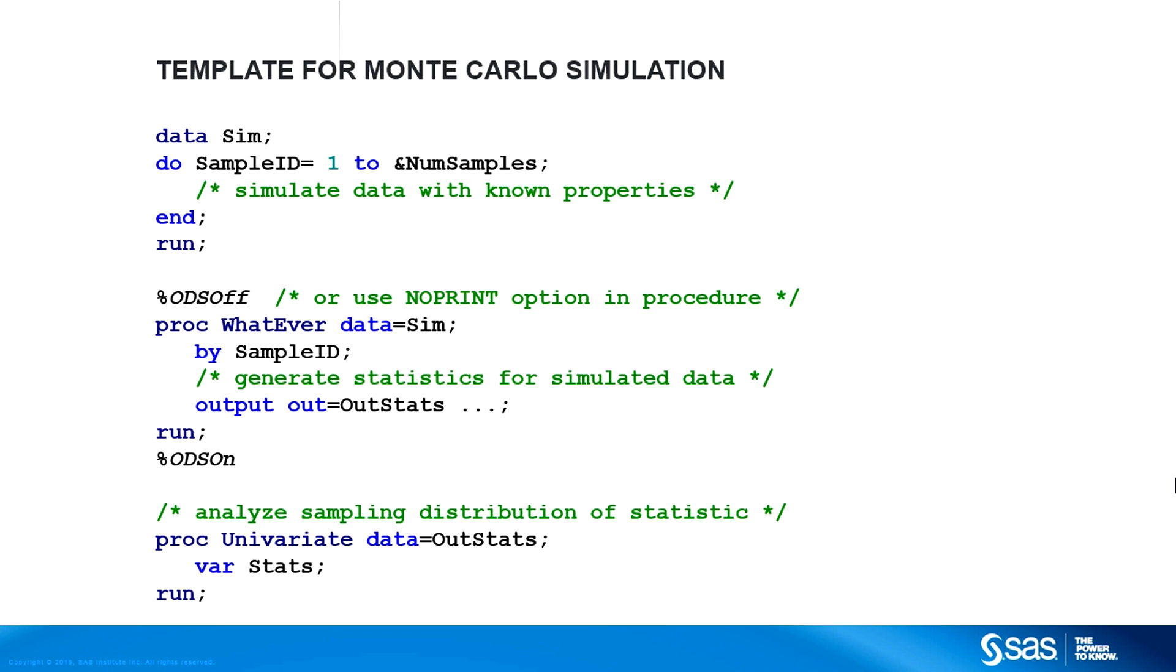A typical Monte Carlo simulation, therefore, looks something like this template. You use the data step to generate all the samples. You turn off ODS. You call a procedure to analyze all the samples. Finally, you analyze properties of the resulting distribution of statistics.